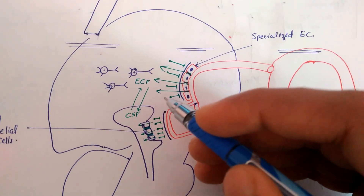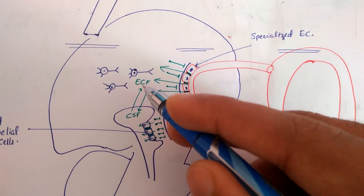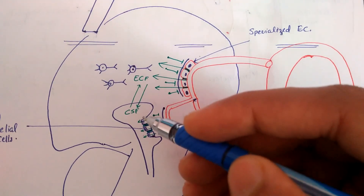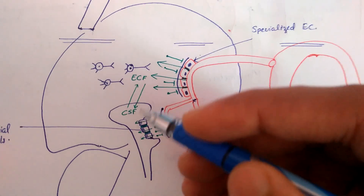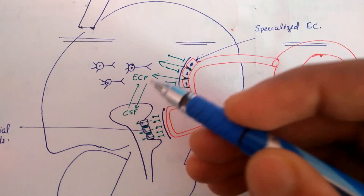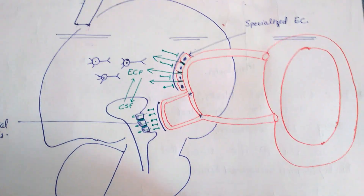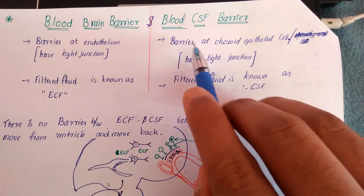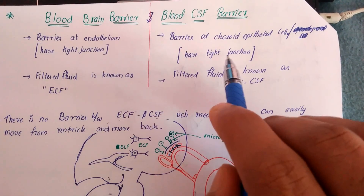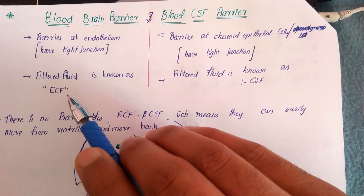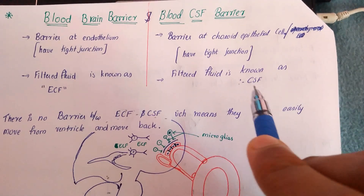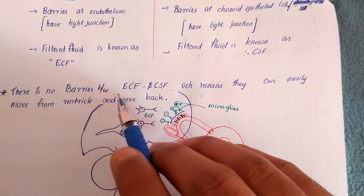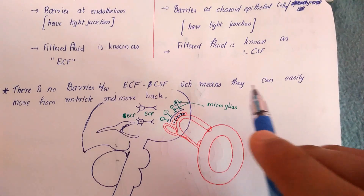There is no effective barrier between the cerebrospinal fluid and the extracellular fluid — they can move freely from the ventricle and back. Therefore, the content of the extracellular fluid and the cerebrospinal fluid is approximately the same. To summarize: in the blood-brain barrier the barrier is at the endothelium; in the blood-CSF barrier the barrier is at the choroid epithelium; and there is no barrier between extracellular fluid and CSF.